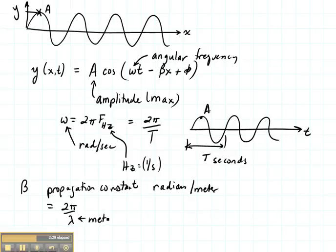The wavelength is given in meters. Right here on our distance plot, this is meters. This represents the wavelength of our wave. So beta is radians per meter, wavelength here is meters, and beta is our propagation constant.